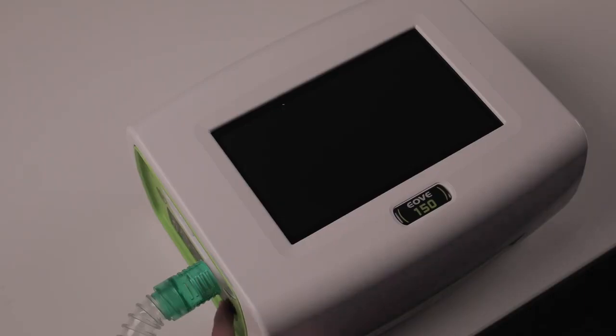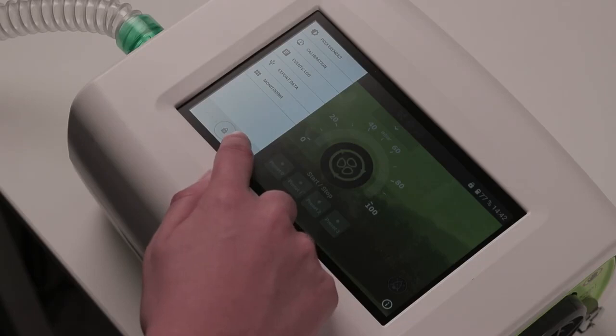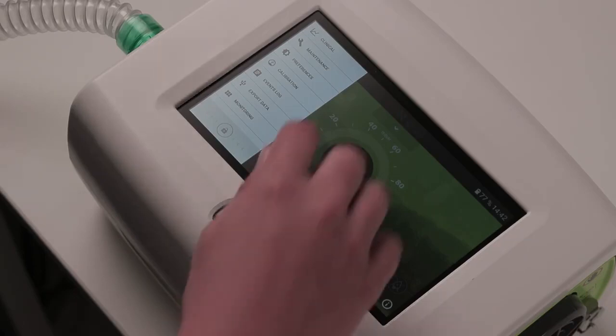To start the EO-150, push on the on-off button on the side of the device. To access the clinical menu, display the menu bar and hold the unlocking area at the bottom of the menu. Validate.